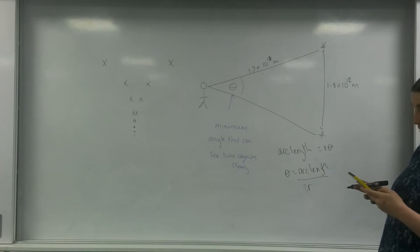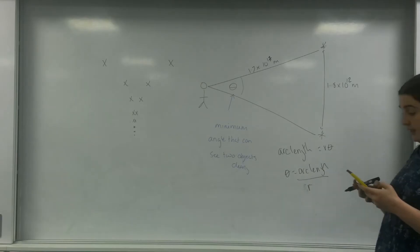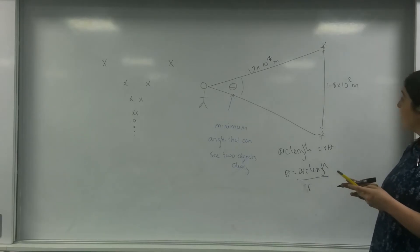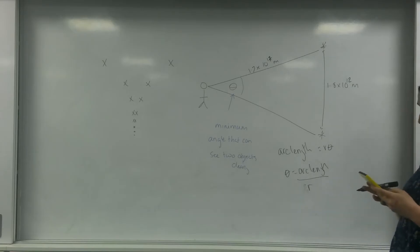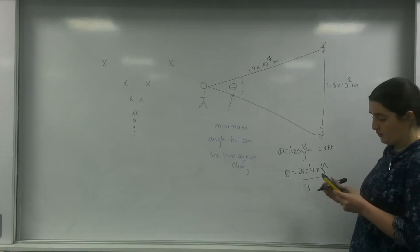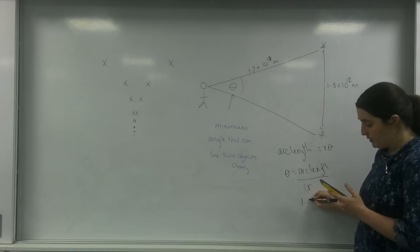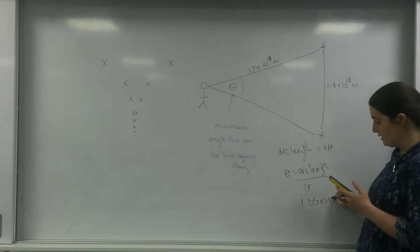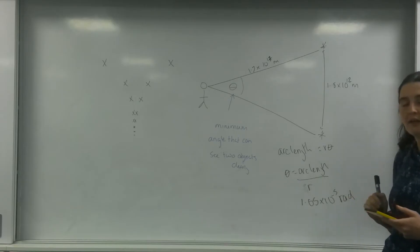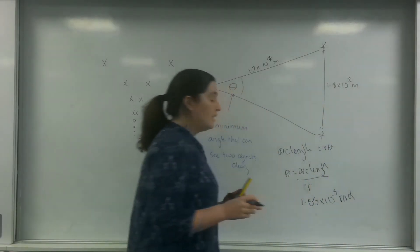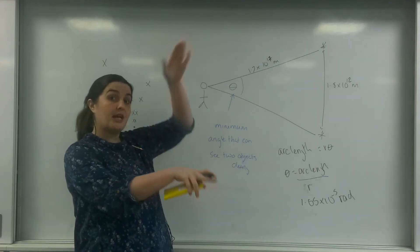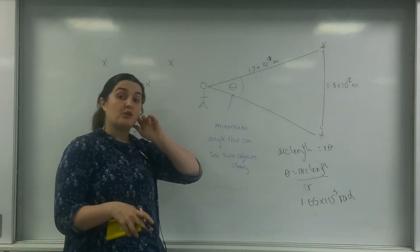Divided by 1.7 times 10 to the 17, and I get an answer of 1.05 times 10 to the minus 5 radians. Which means that is the smallest angle my eye is able to differentiate between two objects.